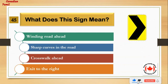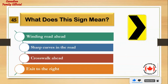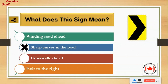What does this sign mean? Number 1: winding road ahead. Number 2: sharp curves in the road. Number 3: crosswalk ahead. Number 4: exit to the right. And the answer is: sharp curves in the road.